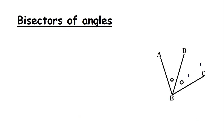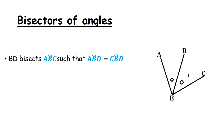Moving on — bisectors of angles. A bisector of an angle is a line which cuts an angle into two equal parts. In this diagram, if angle ABD and angle CBD are equal, then we can say BD is the bisector, so BD bisects angle ABC such that angle ABD equals angle CBD.